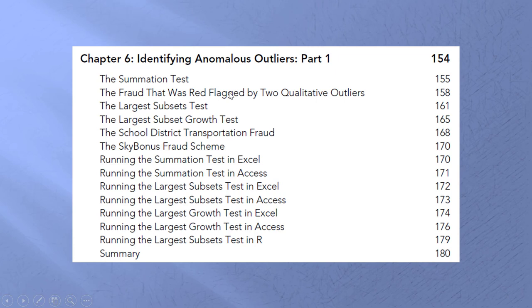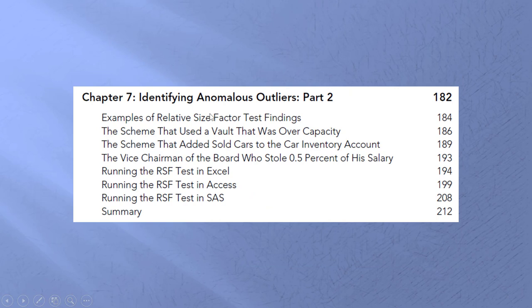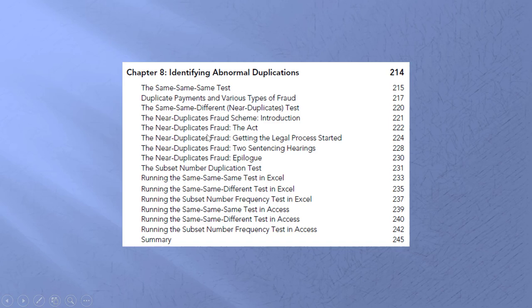We now have two chapters dealing with outliers — things that are odd — and we have a case here as well. The tests are easy to understand in this chapter. The summation test is a continuation of Benford's Law, and what we've done now is broken our data into subsets, looking for abnormal subsets. Those subsets could be an employee, an employee's purchasing card purchases, a vendor, or groups of transactions.